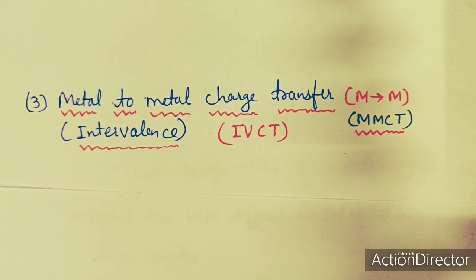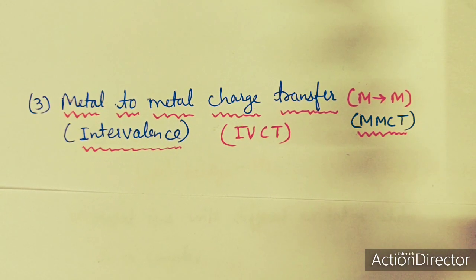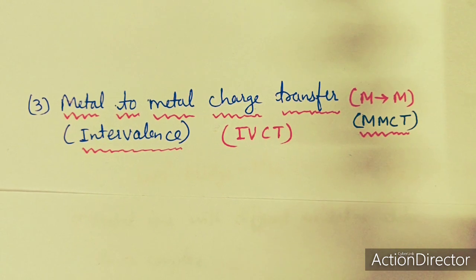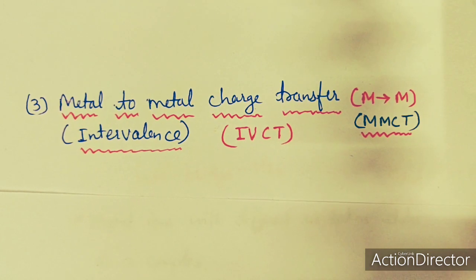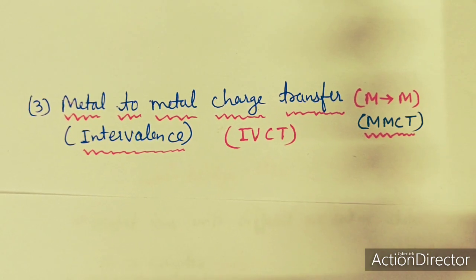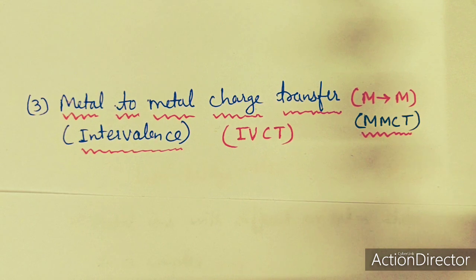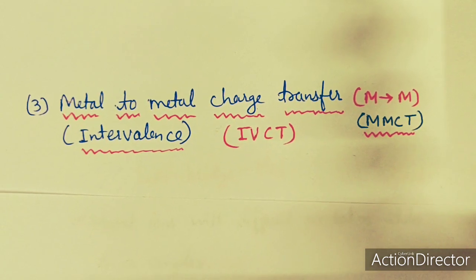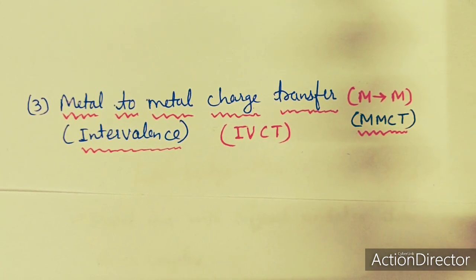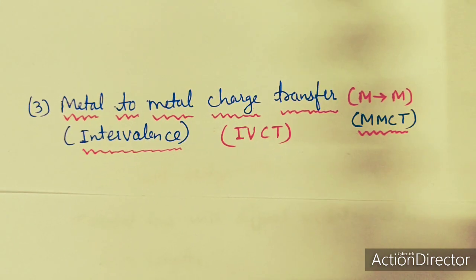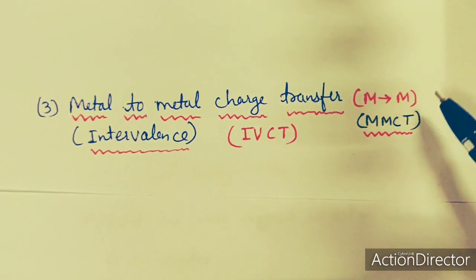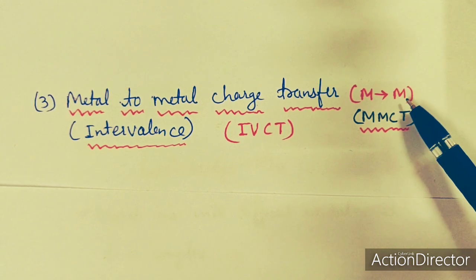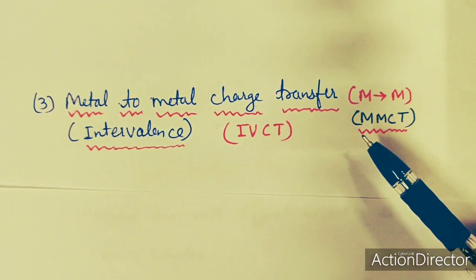Dear students, now we come to the next type of charge transfer transitions: metal to metal charge transfer transitions. These are also known as M to M type, metal to metal. You can see that these are metal to metal type of charge transfer transitions.